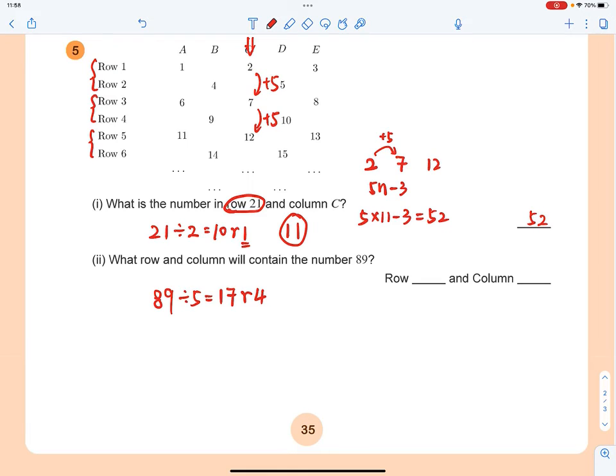You got 17 cycles, not 17 rows. In each cycle, you got 2 rows. So 17 times 2 gives you 34 complete rows. And you have 4 more numbers.